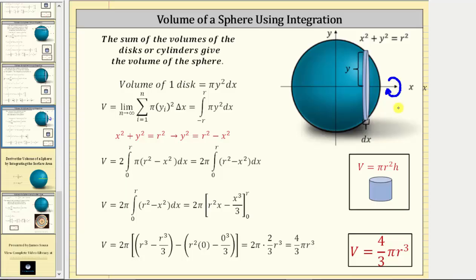And now let's introduce some calculus notation. Let's first focus on this sum here. We have the sum from i equals one to n of pi y sub i squared times delta x.